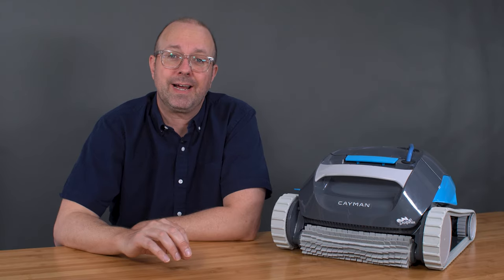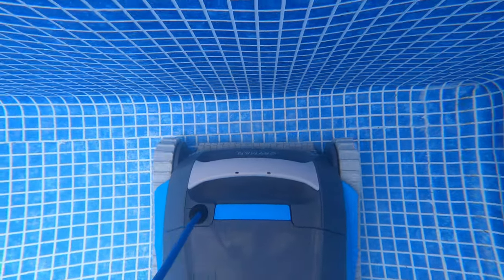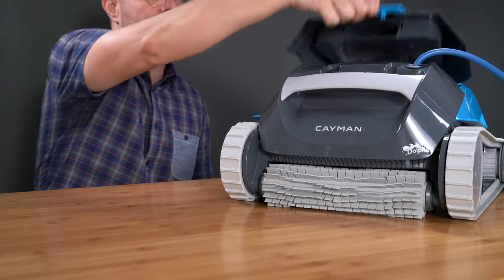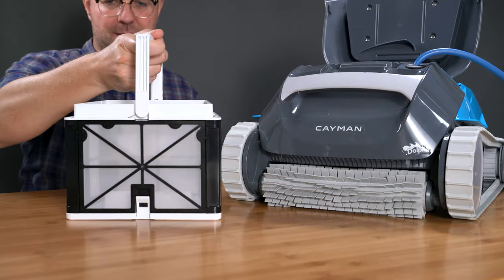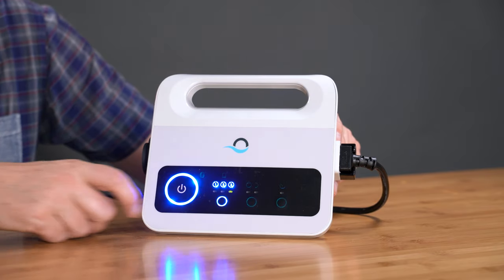One of the best value robots you can get today is the Dolphin Cayman, a great alternative to the Nautilus CC Plus. It has all the same basic features and cleaning performance, then adds an easy-to-clean oversized basket, and delivers all of this at a lower cost. The Cayman cleans above-ground pools and in-ground pools, scrubs the floors and walls of your pool, includes the standard fine-filter basket, a programmable power supply, a two-hour cleaning cycle, and a two-year warranty.